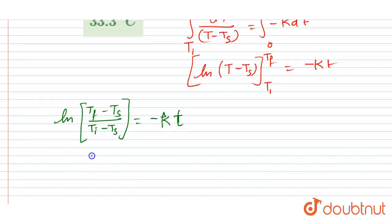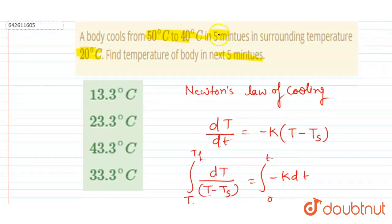Very simple. So we got here T final minus surrounding temperature equals (T initial minus surrounding temperature) times e to the power minus Kt. You see, here in the first five minutes, temperature changes from 50